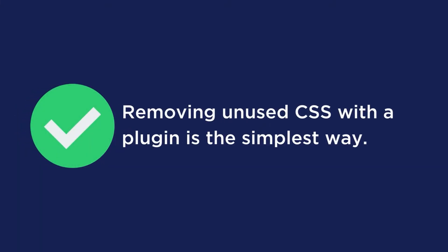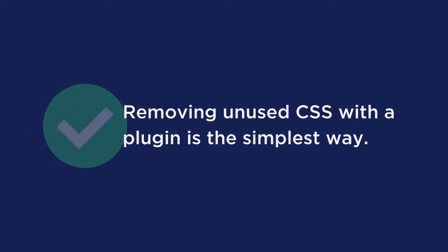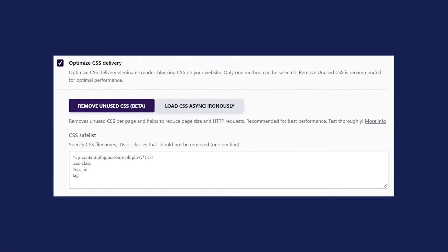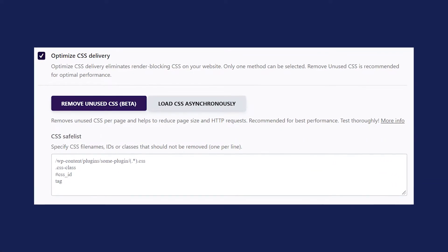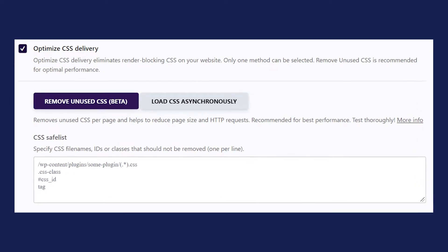If your coding knowledge is limited and you're looking for an easier solution, removing unused CSS with a plugin is the simplest way to optimize your WordPress site with no effort at all. Our plugin WP Rocket offers a powerful feature that allows you to tackle unused CSS in just one click. Simply enable the option shown on screen and the plugin will remove the unused CSS included in the HTML of the page — it's extremely easy and straightforward.